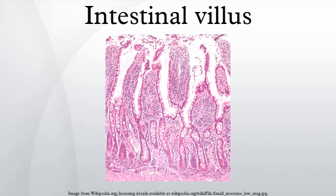Goblet cells and enterocytes represent the principal cell types of the epithelium of the villi. In all humans, the villi and the microvilli increase intestinal absorptive surface area approximately 30-fold and 600-fold, respectively, providing exceptionally efficient absorption of nutrients in the lumen. This increases the surface area so there are more places for food to be absorbed.